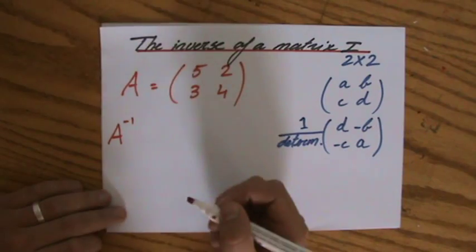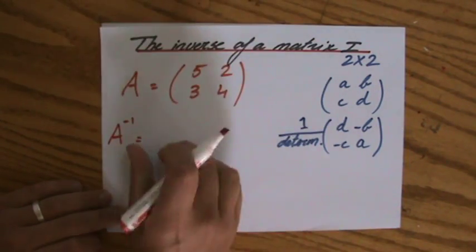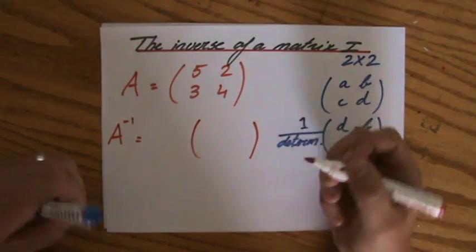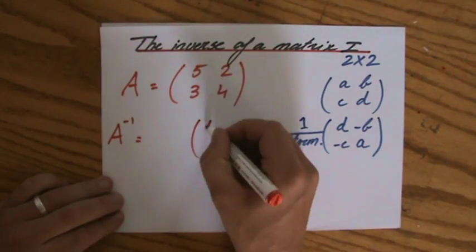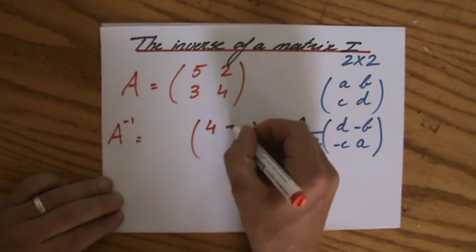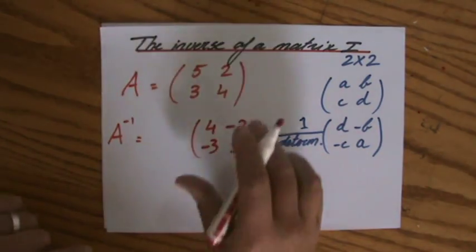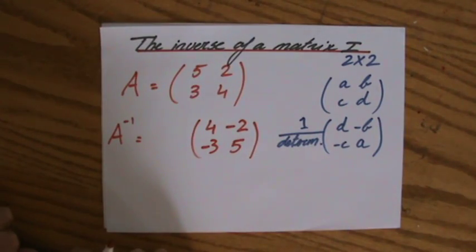So, the inverse. A to the power minus one equals. I'm going to leave some space for that scalar. And I'm just going to start by swapping A and D. So, four and five. And I'm just going to change the signs of B and C. You see that? They do not swap. Just the signs change.